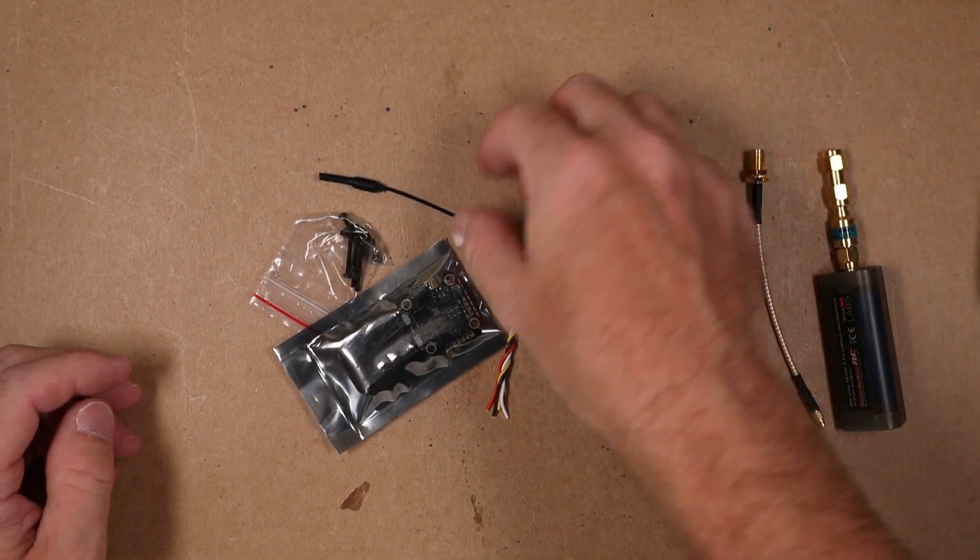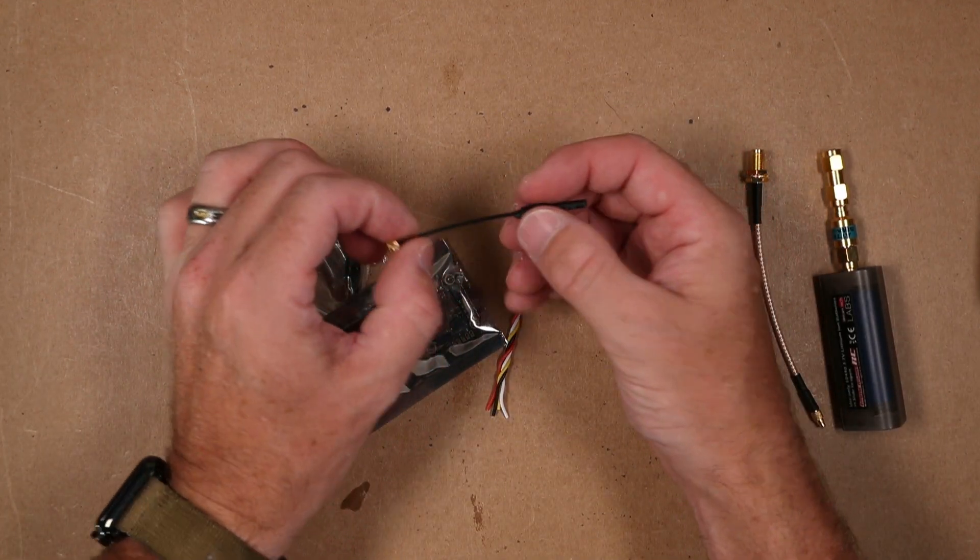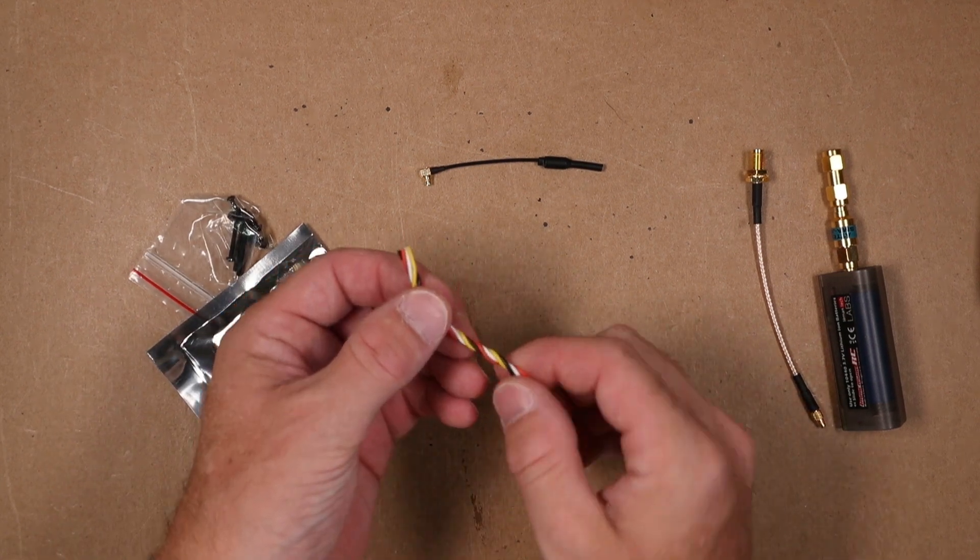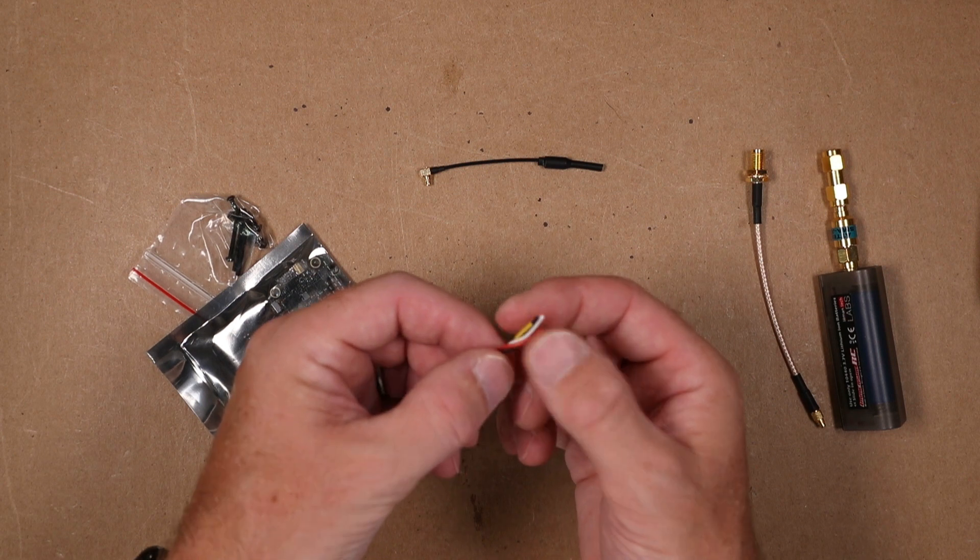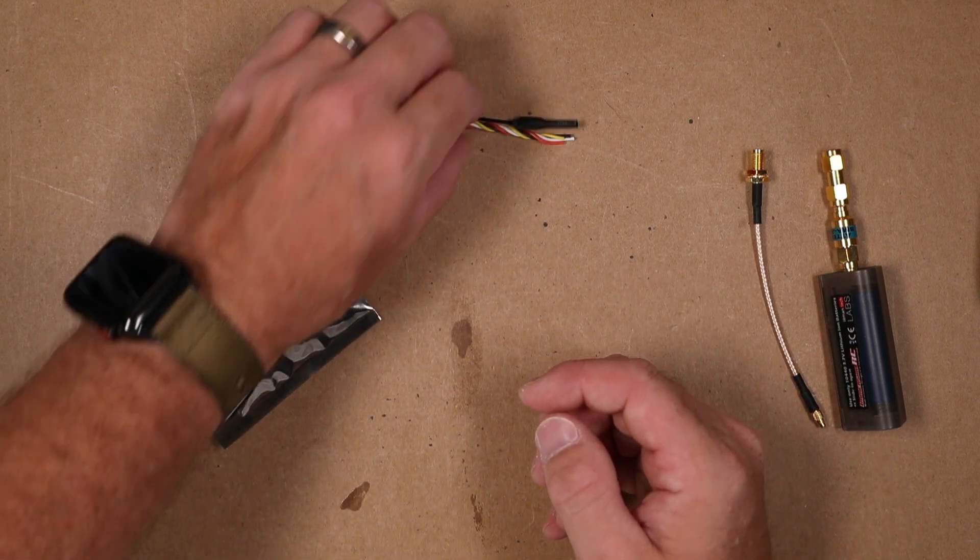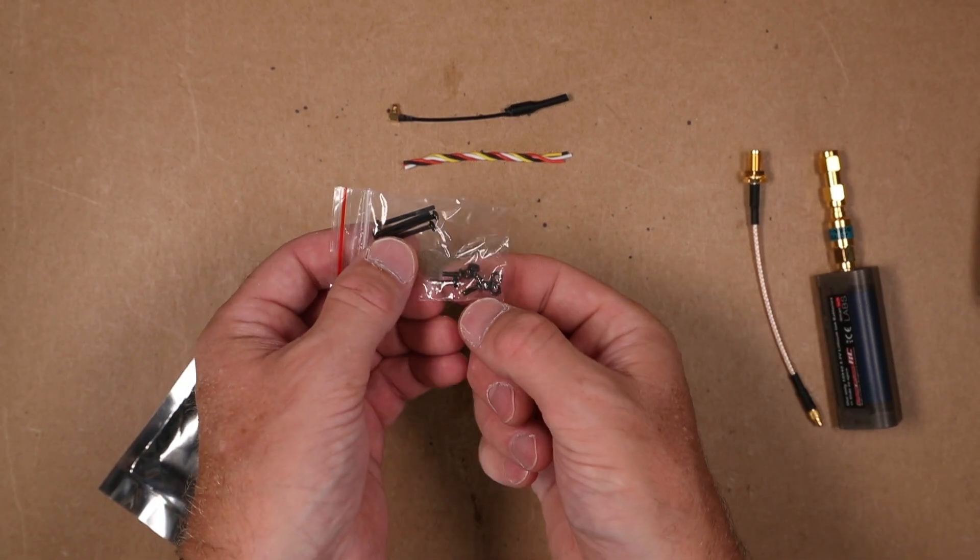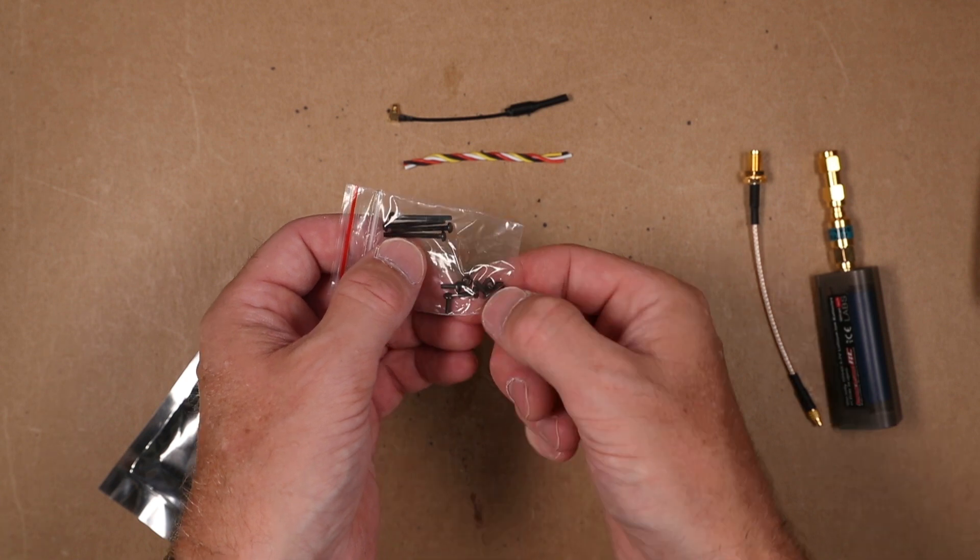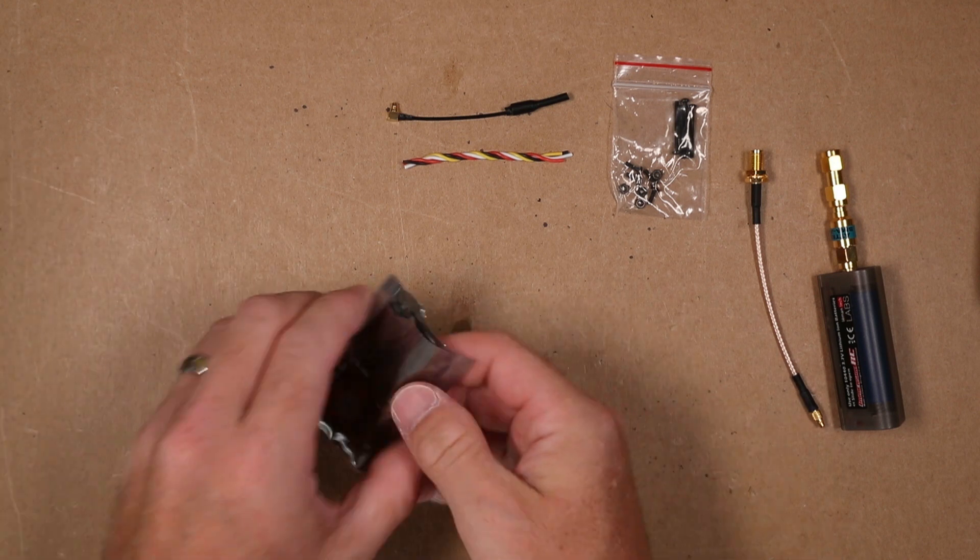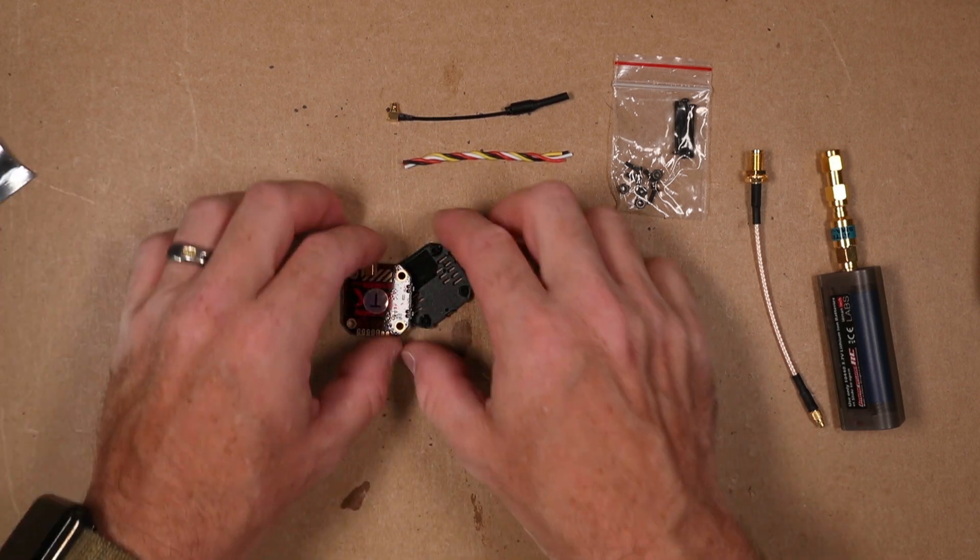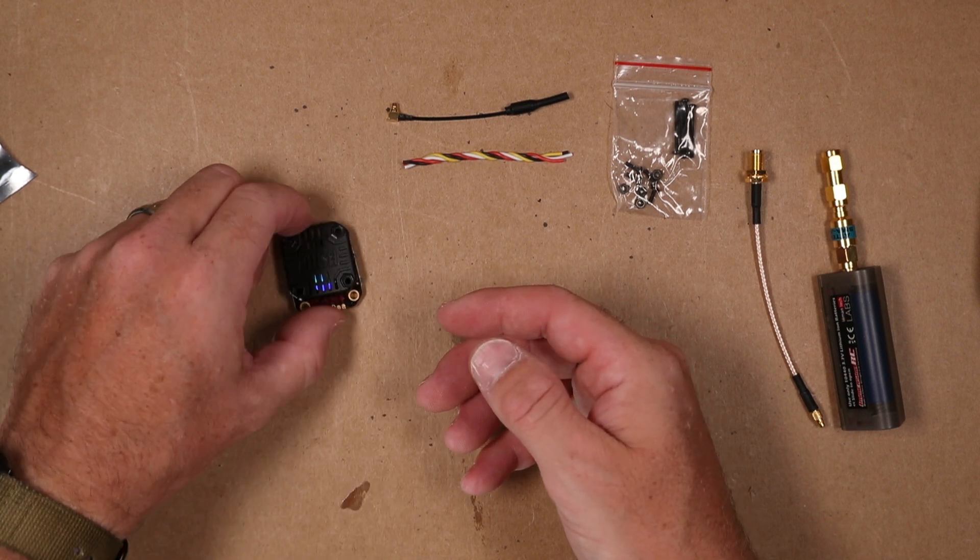In the packaging you get an MMCX antenna, a coil of wires in black, white, red, and yellow, 20 millimeter stack screws, six millimeter screws, four nuts, and finally the VTX. It comes with a plastic housing that you can just place right over it.